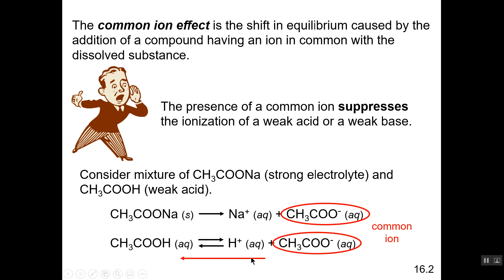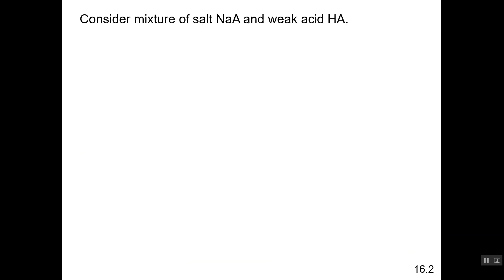So that's one example of the common ion effect, where the presence of the common ion already in solution — the acetate ion — will reduce the level of dissociation of acetic acid. If you were to compare the percent ionization of acetic acid in the absence of this versus in the presence of the large amount of acetate ion, it would be higher in the absence.